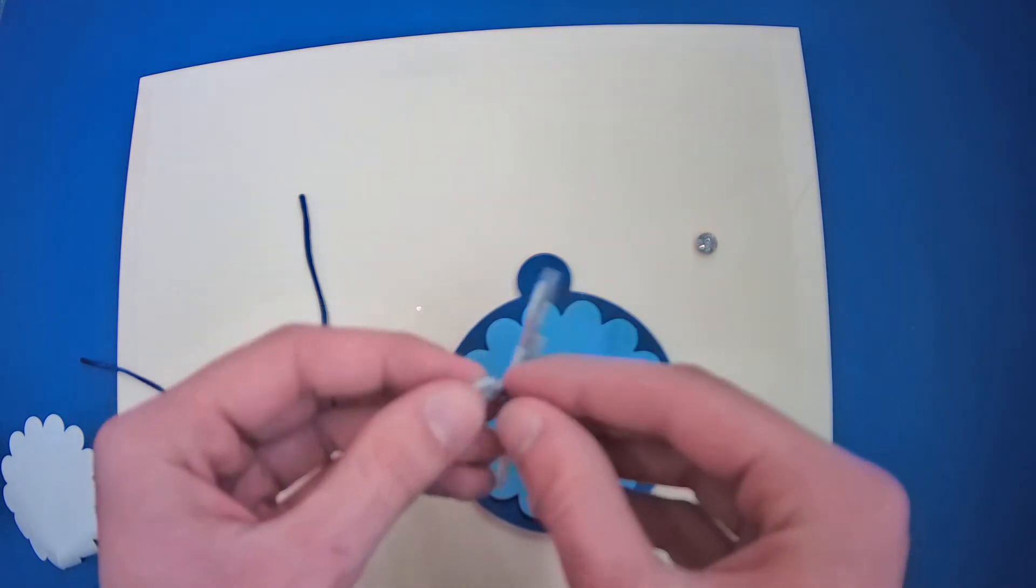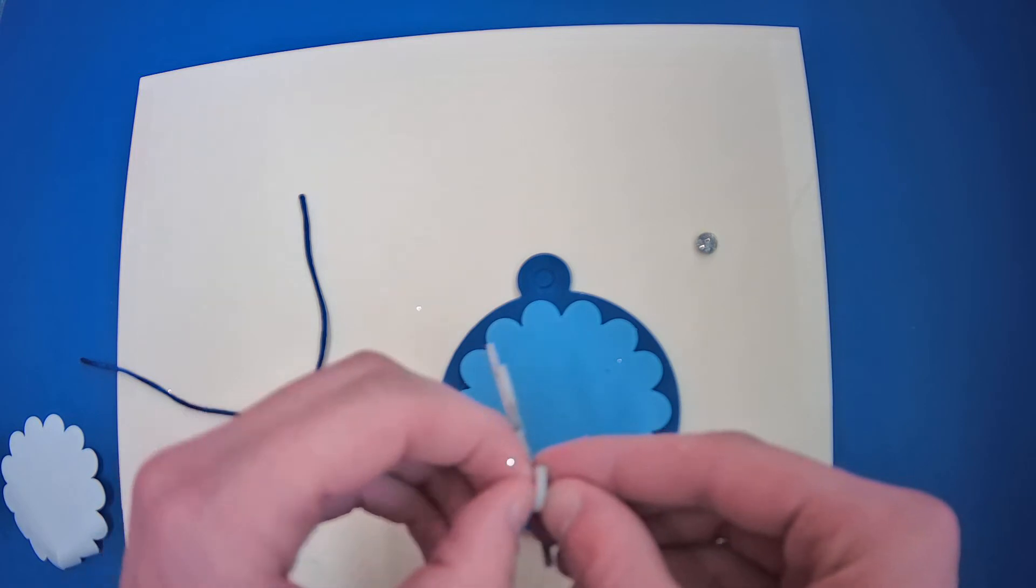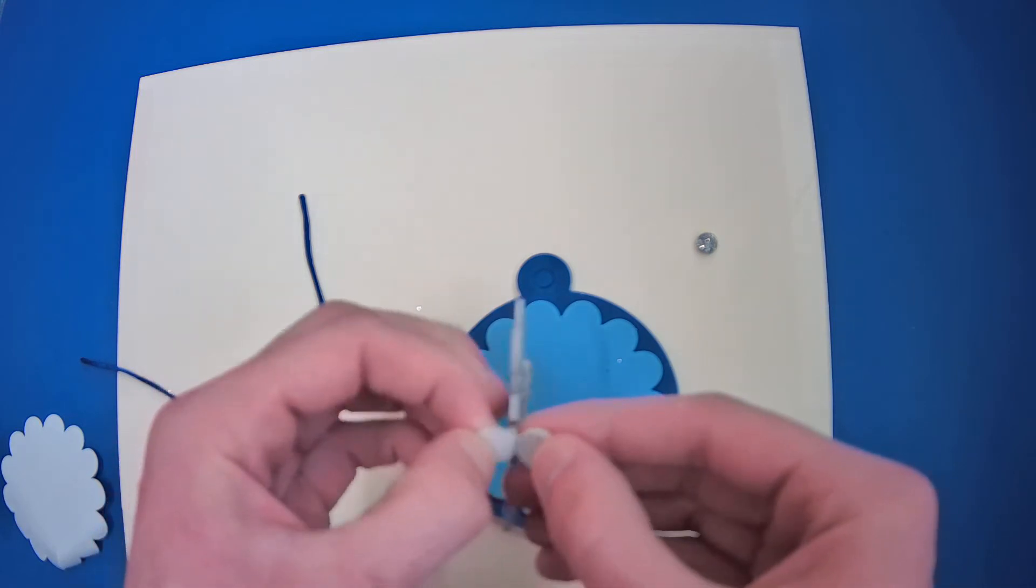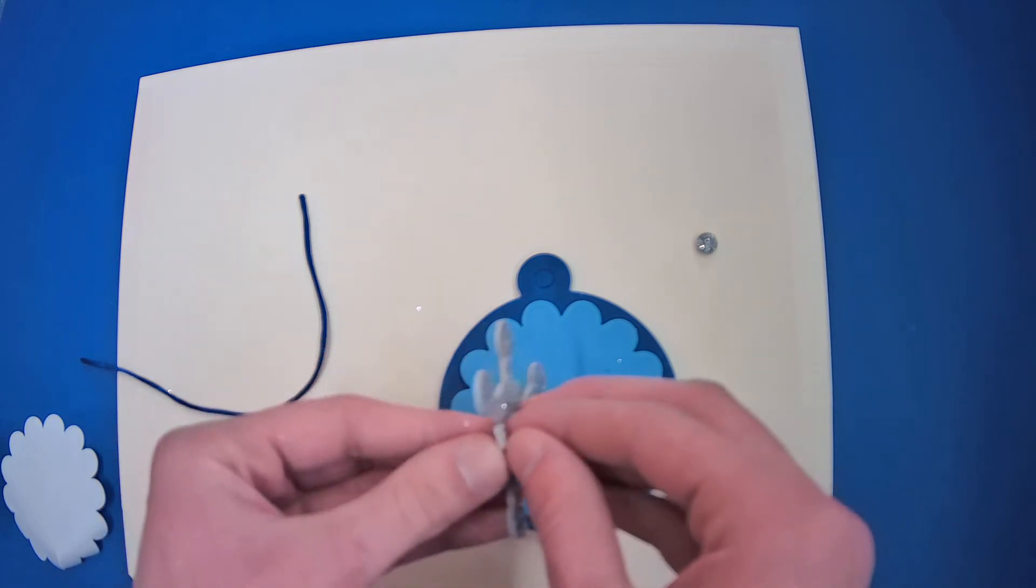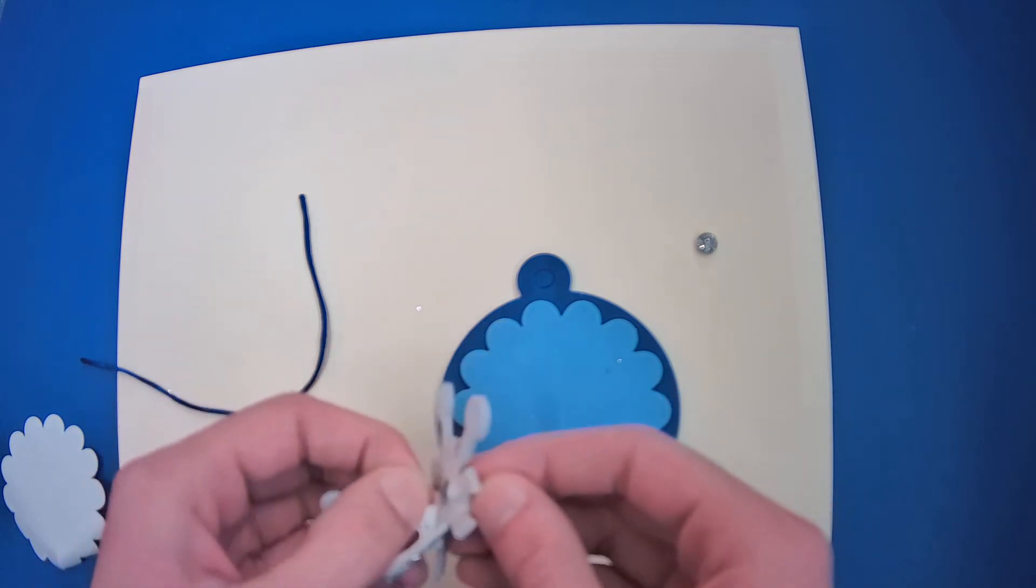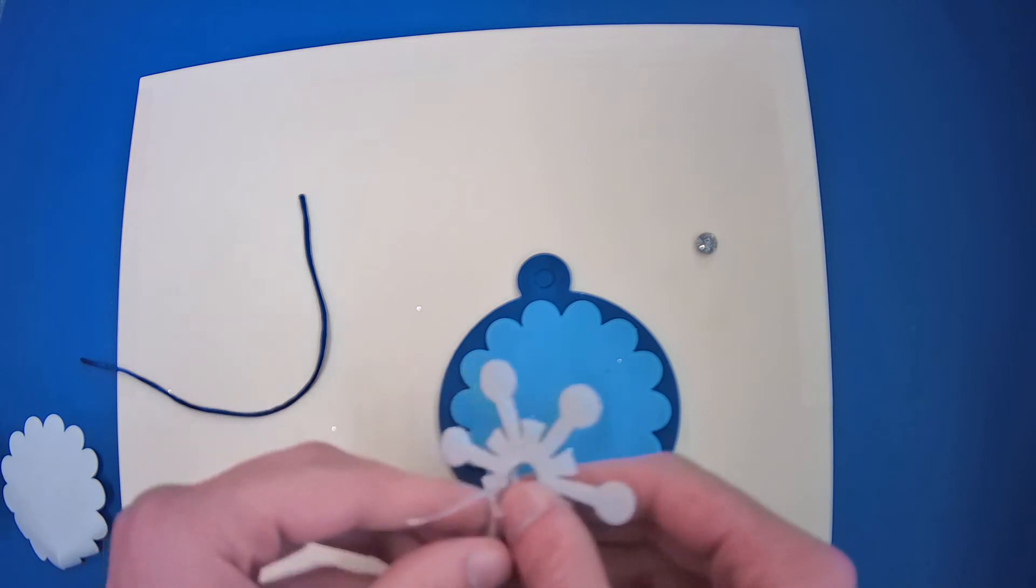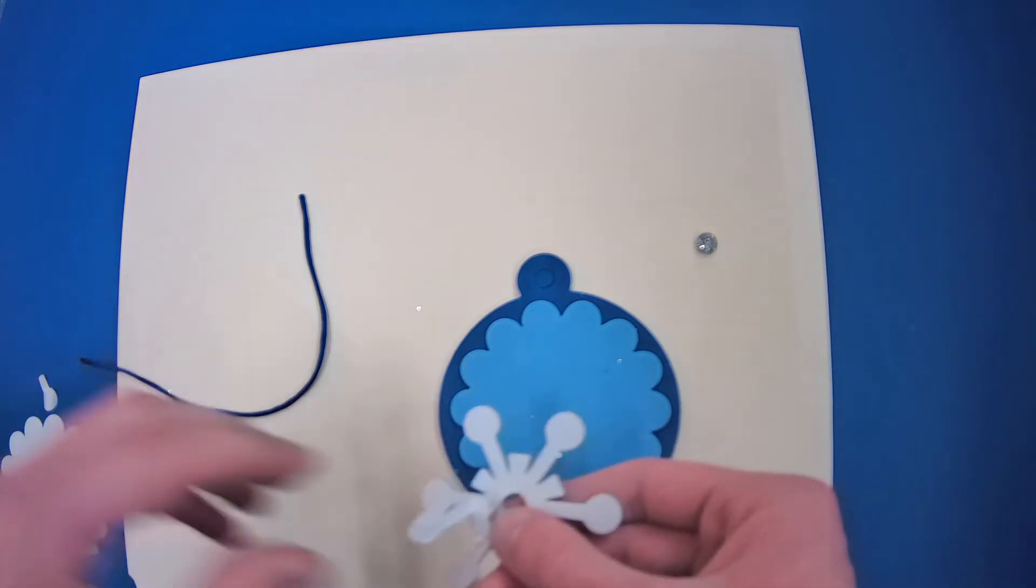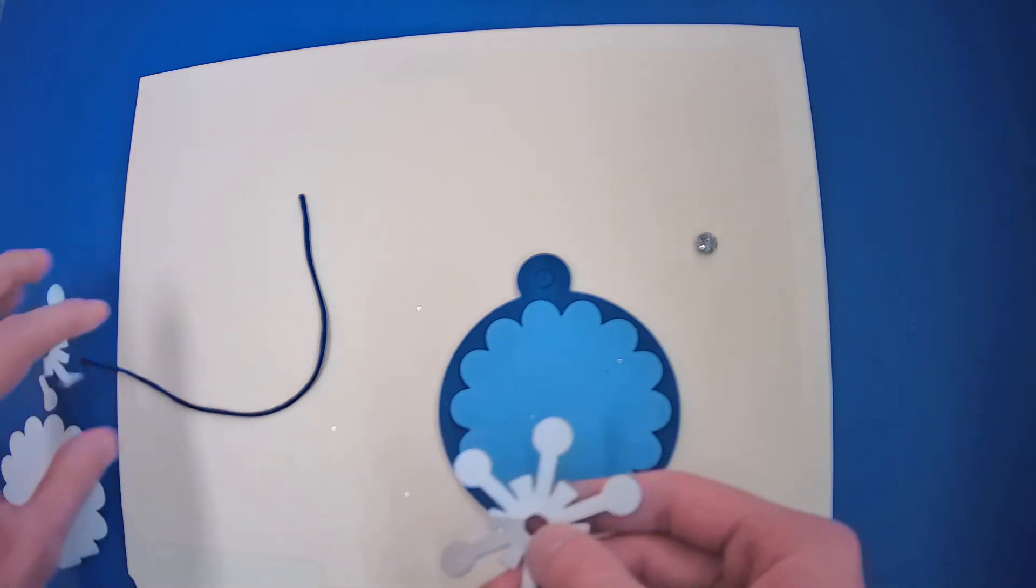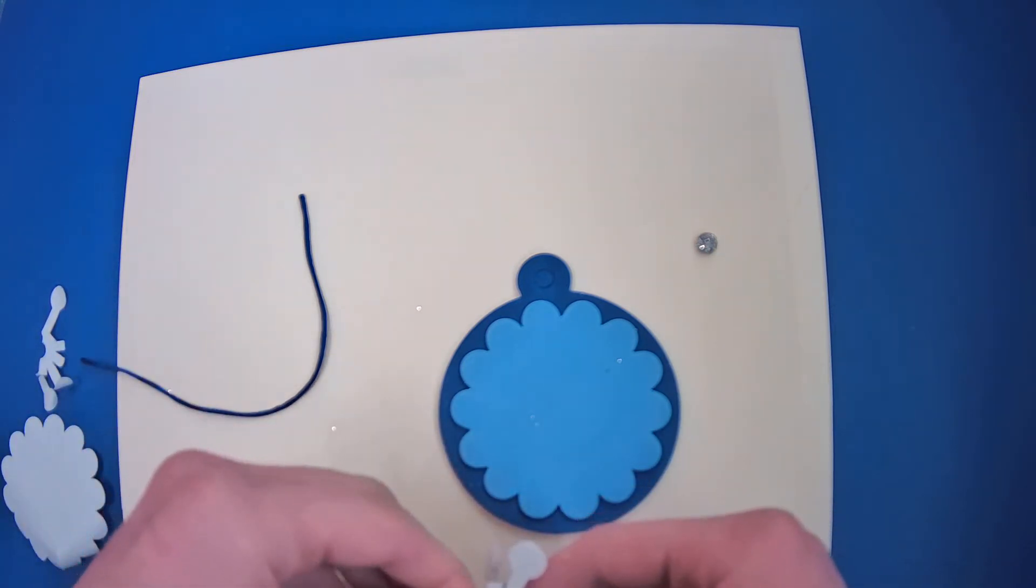Next, we're going to take the wax paper off the back of this too. Just like that and you want to make sure you get all of it. Sometimes it's very hard. It doesn't like to all come off at once. You're going to have to take it off in chunks and that's okay.